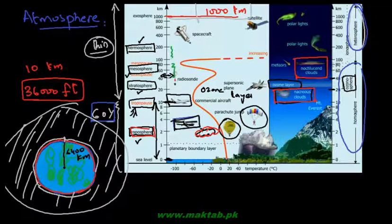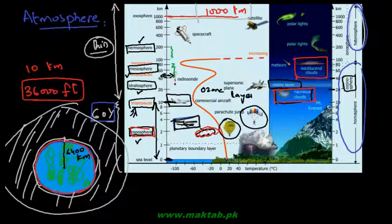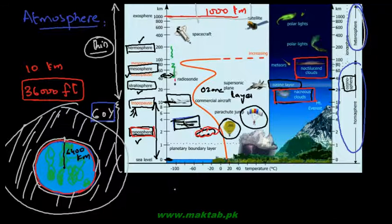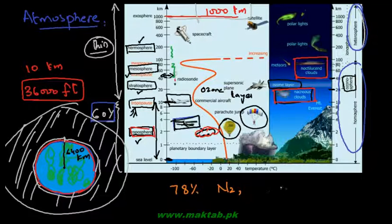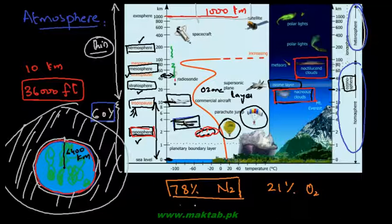Now let's look at the composition of the atmosphere. Overall, earth's atmosphere is approximately 78% nitrogen gas and about 21% oxygen gas. So the major component of earth's atmosphere is nitrogen, which is an inert gas because nitrogen has a triple bond (N≡N).